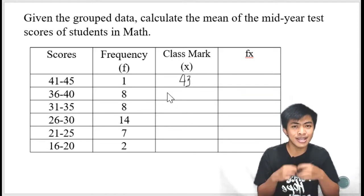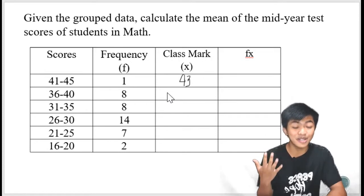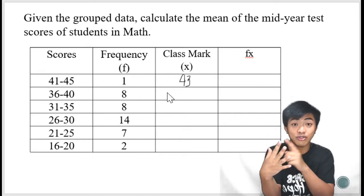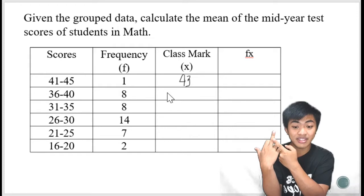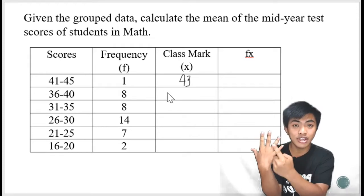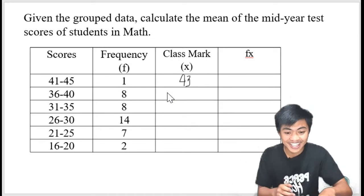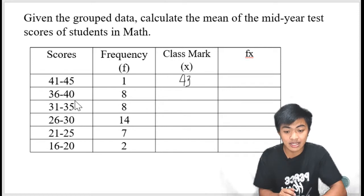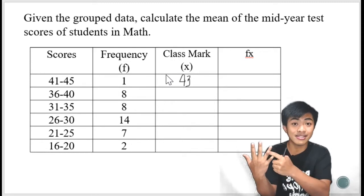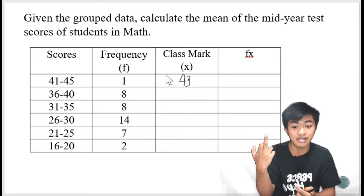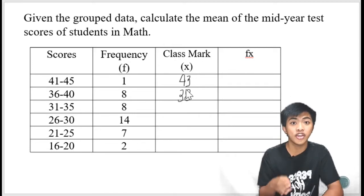And there is an easier method kung medyo hindi malaki yung class interval natin. We can actually count. Yung class interval natin is 41, 42, 43, 44, 45. So ano ba yung number in between 41 and 45? That is 43. So ganun lang. Same din lang ang gagawin dito sa next class. What is the number in between 36 and 40? 36, 37, 38, 39, 40. The number in between them is 38. Yun ang gagawin mo hanggang sa makuha mo lahat ng class mark.